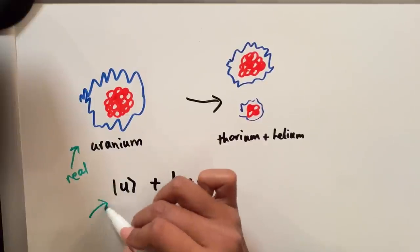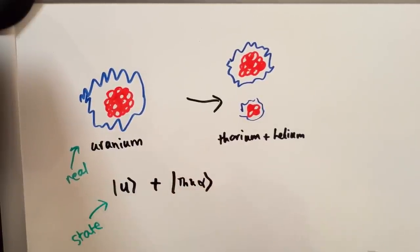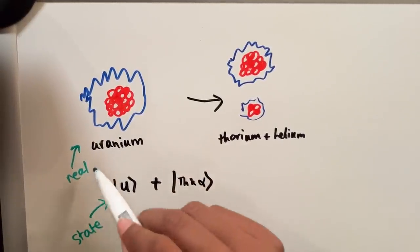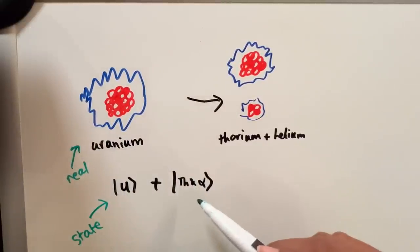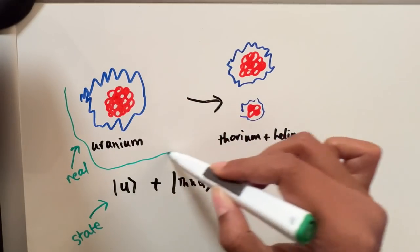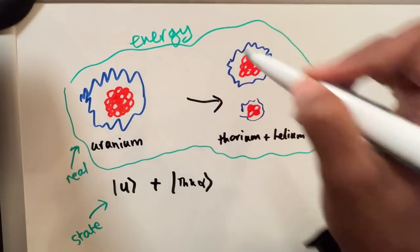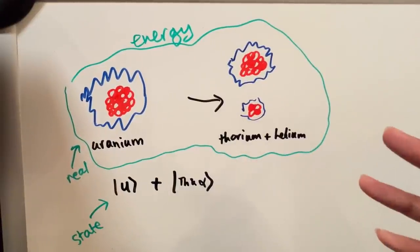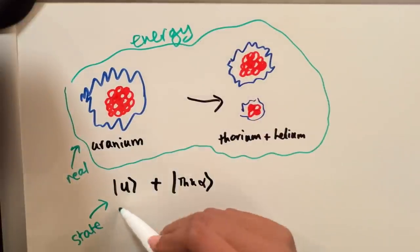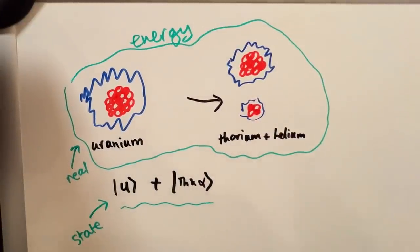But going back to what I was saying earlier about the object being the real thing and the wave function being just the state of that thing, that doesn't quite work here because you can't just say oh the uranium is the real thing, because one of the states is for the uranium to not even be uranium anymore. And so what you really should say is like the constituent parts of the uranium are the real thing, or perhaps even better, instead of saying it's the uranium, you should say it's the energy that could be uranium but could be thorium plus helium.